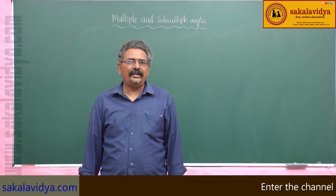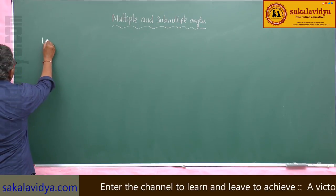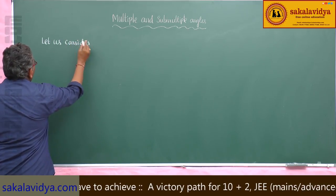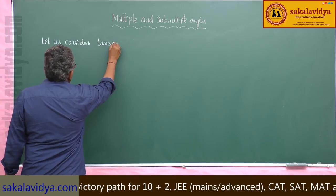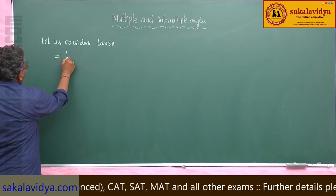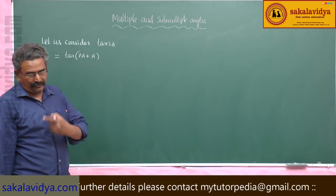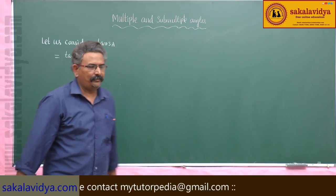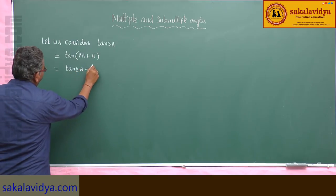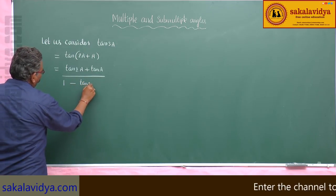Let us derive the formula of tan(3a) and cot(3a). We consider tan(3a), which can be written as tan of (2a + a). This is in the form of tan(a + b), so we apply the tan(a + b) formula: tan(2a) + tan(a) divided by 1 minus tan(2a)·tan(a).